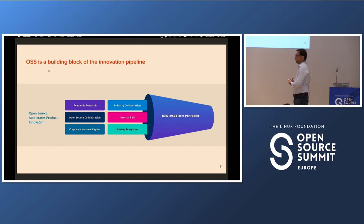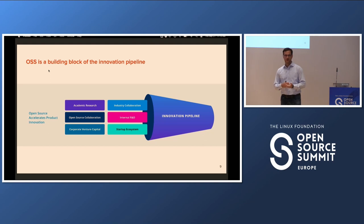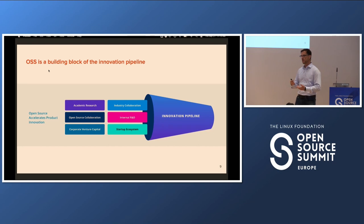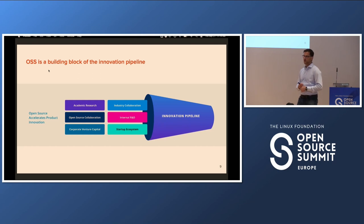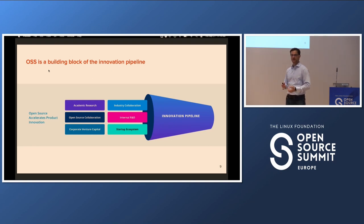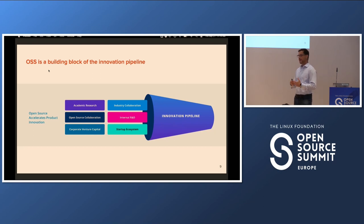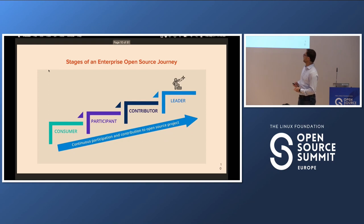In general, when you look at open source, it's just another tool. Organizations typically have their own internal R&D, investments in startups, and university relationships. So there are multiple venues for innovation, and open source is just one of them. When organizations start thinking of open source as another building block in their innovation pipeline, it becomes a lot easier to work with and recognize as strategic — as strategic as investing in startups or building university relationships.